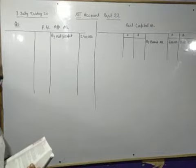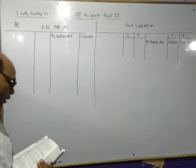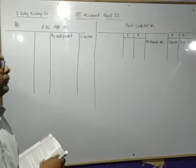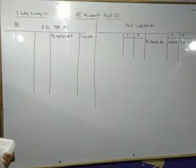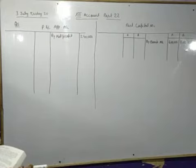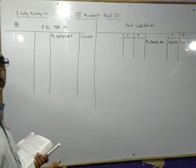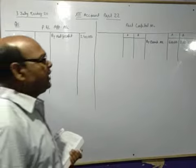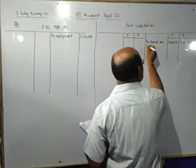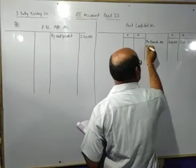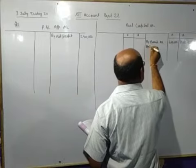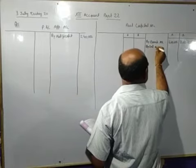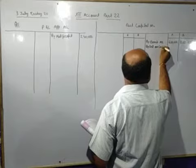Interest on capital is to be allowed at the rate of 6% per annum. For interest on capital, you will pass two entries. First entry for interest on capital due: interest on capital account debit to partner's capital account. So, partner's capital account credit side, you will write by interest on capital.